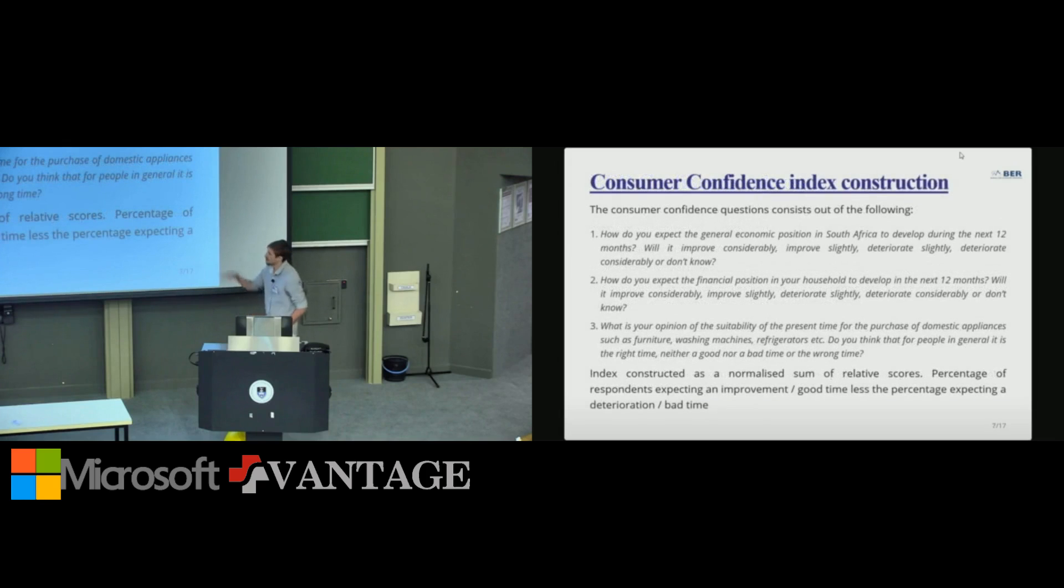So there's these questions that they ask. And the questions are things like, how do you expect the general economic position to be in 12 months? It asks about, do you think it's a good time to buy certain products? And in the end, they collect this 2,500 sort of survey questions that goes out and they construct the index known as a normalized sum of relative scores. So what this means is, you take the percentage positive minus the percentage negative, and you get a score or an index value.